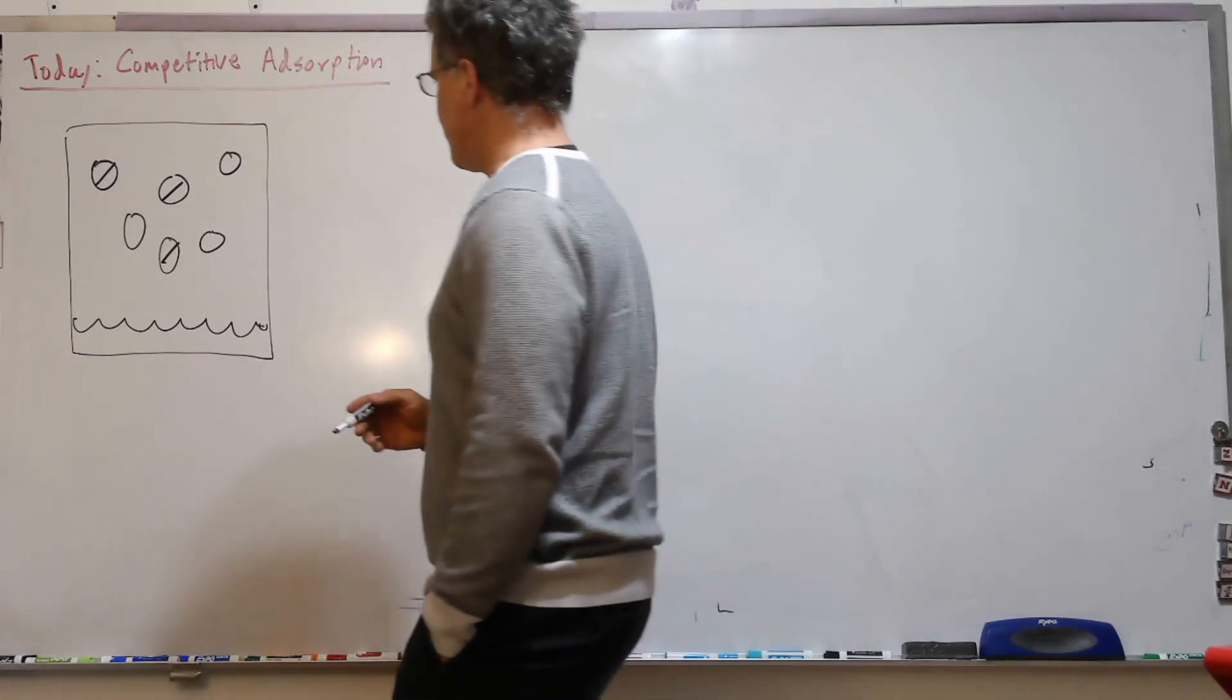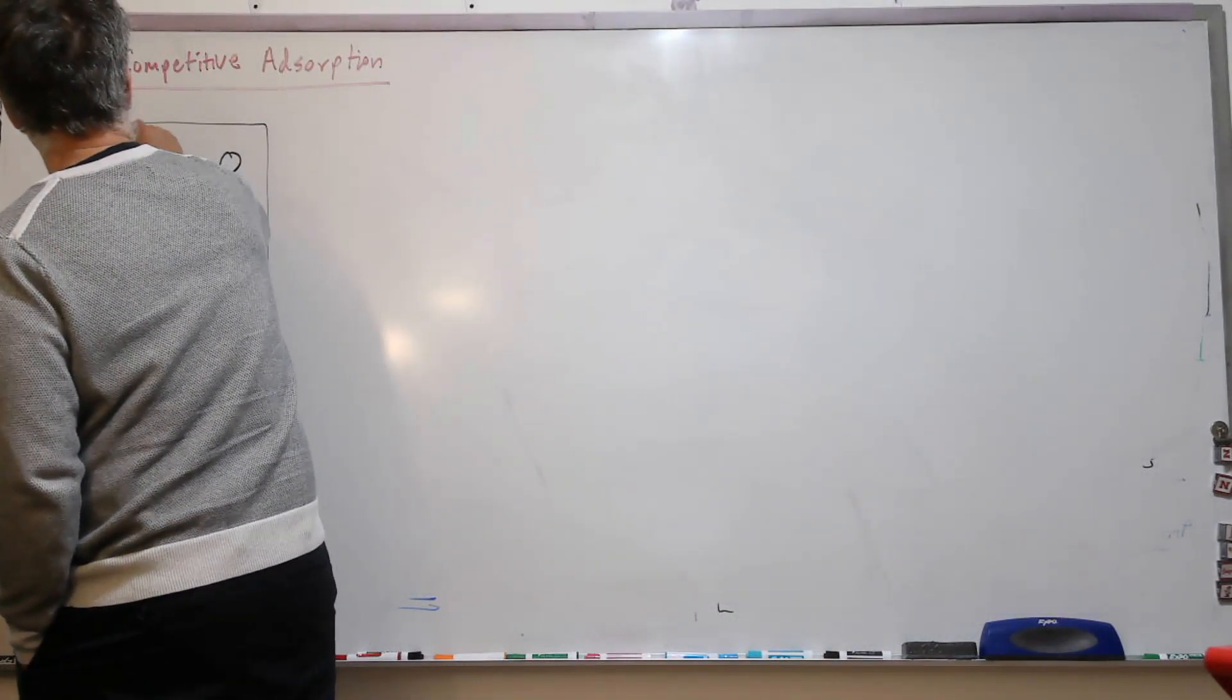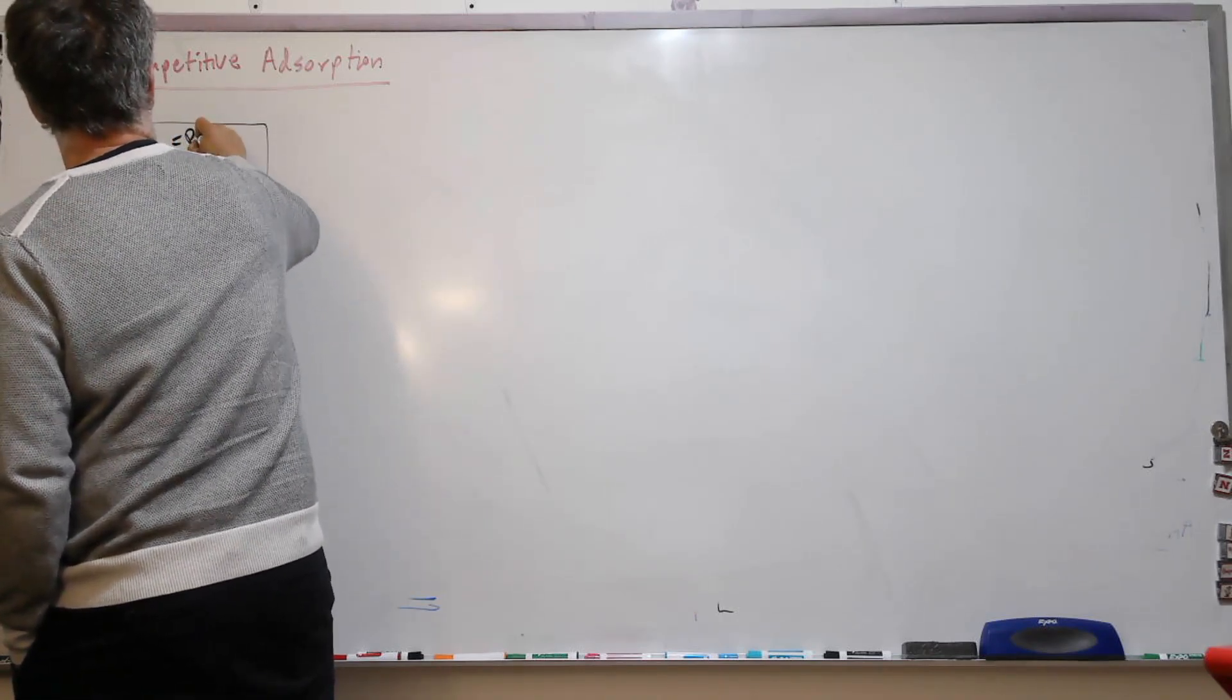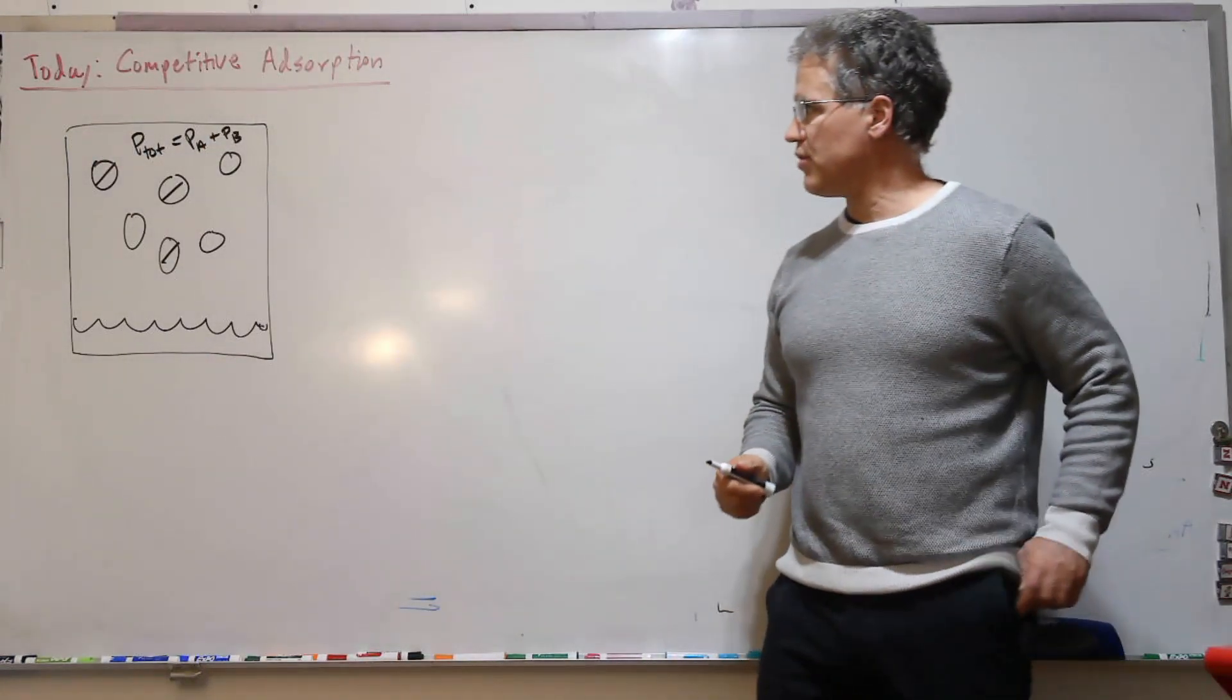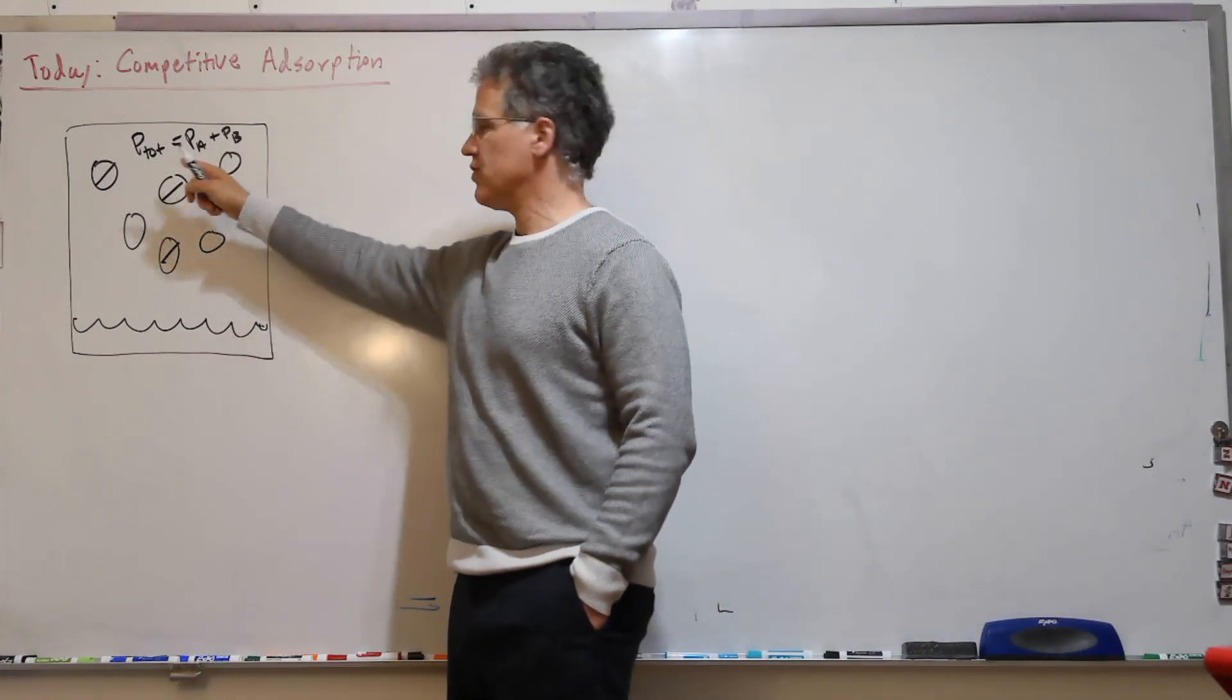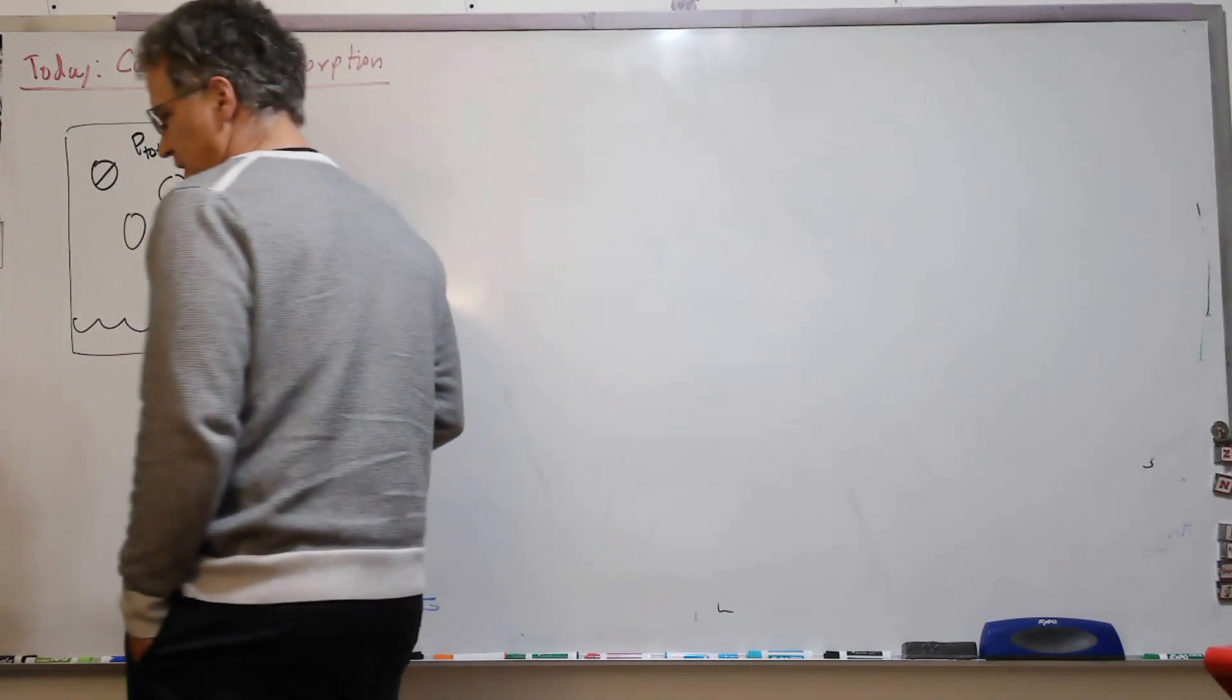The pressure in here, P total, is equal to P_A plus P_B. That's Dalton's law of partial pressures. So we've got partial pressure A, partial pressure B, and the total pressure here.